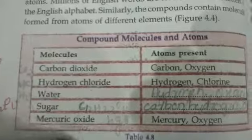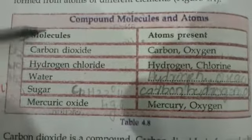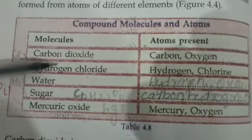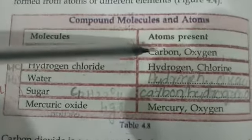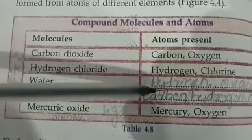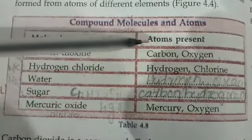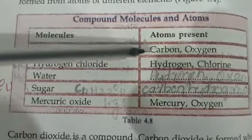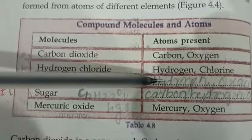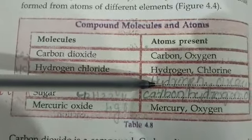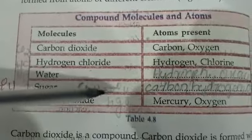Then mercury oxide contains mercury and oxygen. So these are some of the compounds. A compound is formed by the combination of two or more elements. Some compounds contain two elements and some are having three elements.